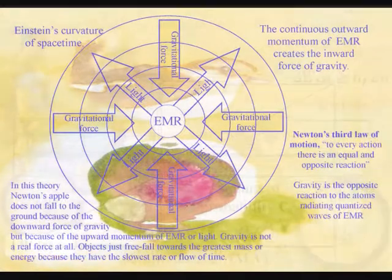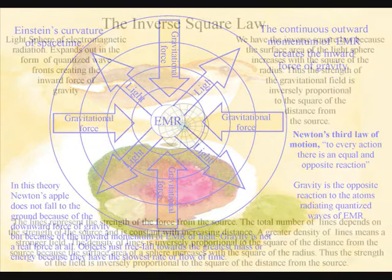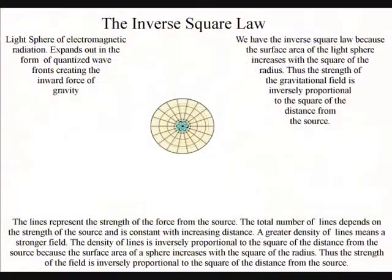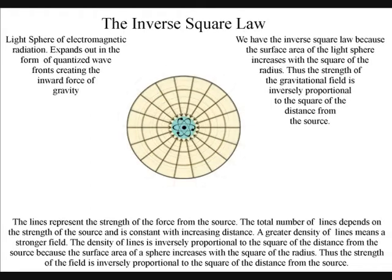In this theory, the universal force of gravity is formed by the same process. Newton's apple does not fall to the ground because of the downward force of gravity, but because of the upward momentum of electromagnetic radiation or light. Gravity is not a real force at all.